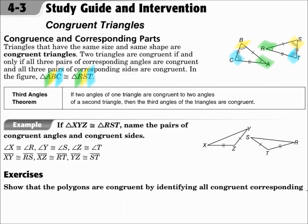The third angles theorem says that if two angles of one triangle are congruent to two angles of a second triangle, then the third pair of angles is also congruent. Keep that in mind.